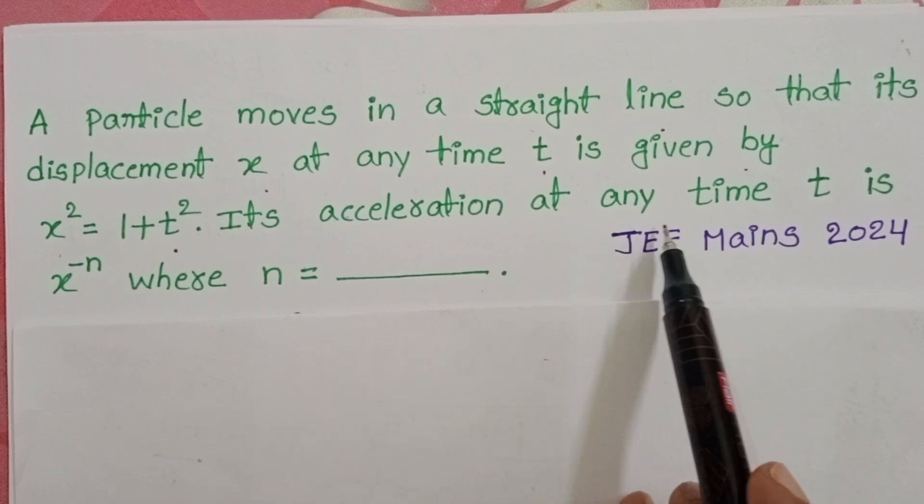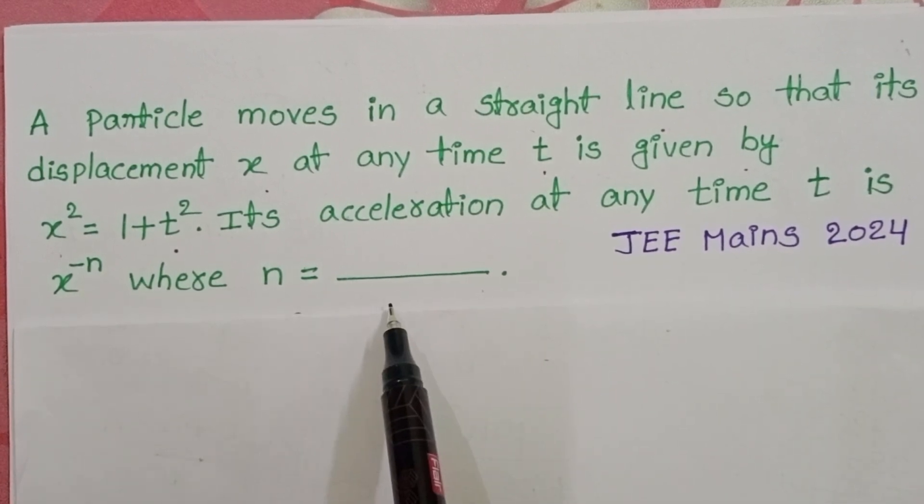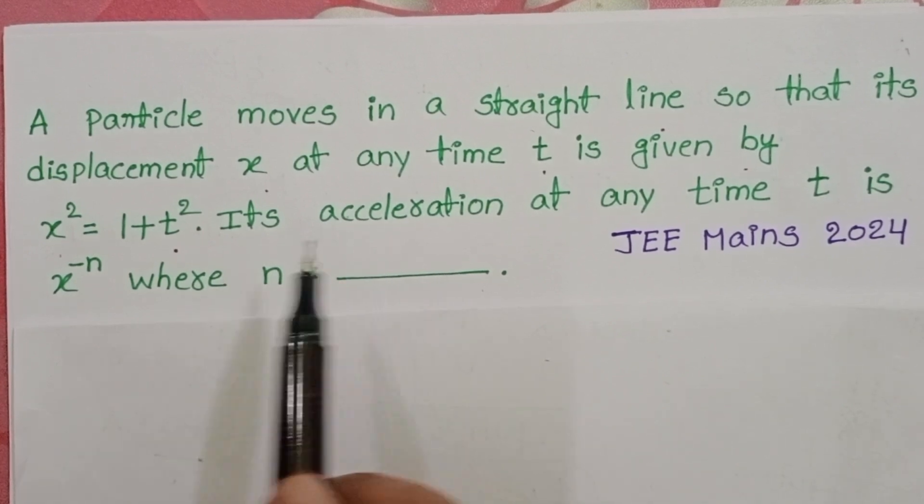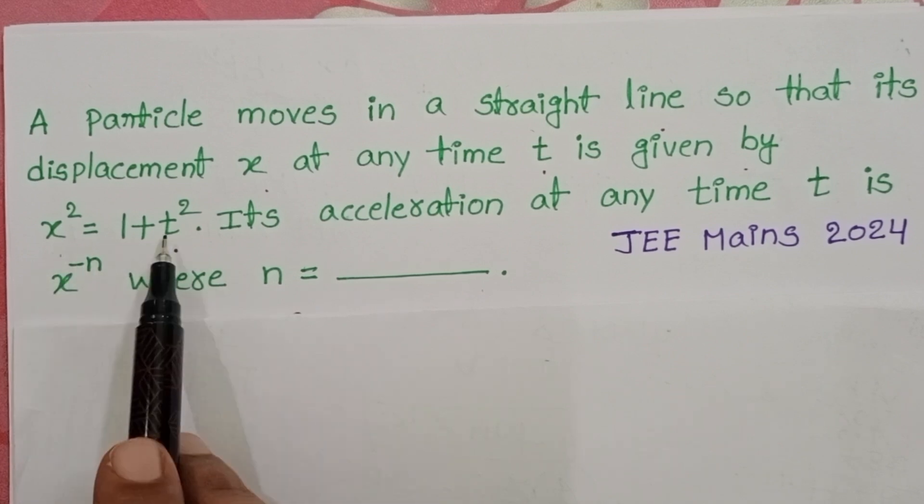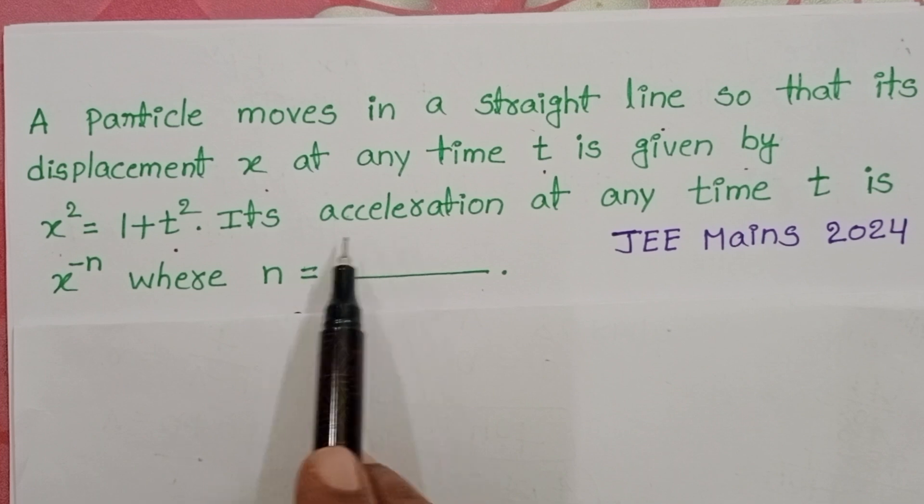Its acceleration at any time t is x^(-n) where n equals to. In the given question, a particle is moving along a straight line path and we know the relation between distance and time. By using this relation we have to find out the acceleration.